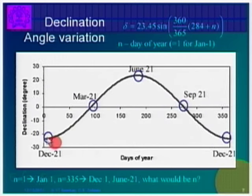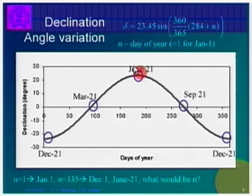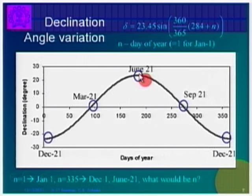Look at the variation of the declination angle. On the equinox day, when day length equals night length, δ = 0. This means the equatorial plane is exactly in line with the line connecting the centre of the sun to the centre of the earth. September 21st and March 21st are the equinox days. December 21st is when the sun goes to its extreme position — what we call Dakshinayan in the Hindi calendar — and June 21st it goes to the other extreme. So δ crosses 0 at two points, reaches −23.45° on December 21st, and +23.45° on June 21st.